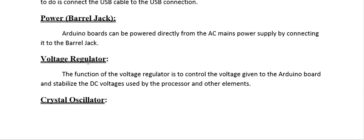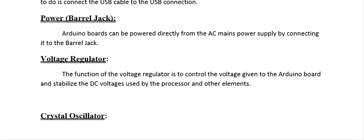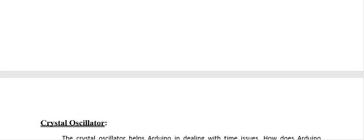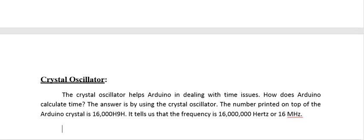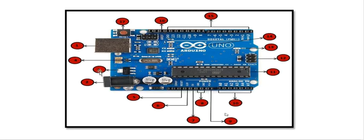Third: Voltage Regulator. The function of the voltage regulator is to control the voltage given to the Arduino board and stabilize the DC voltage used by the processor. It regulates the voltage to a constant level so that the voltage doesn't fluctuate and the output remains stable.